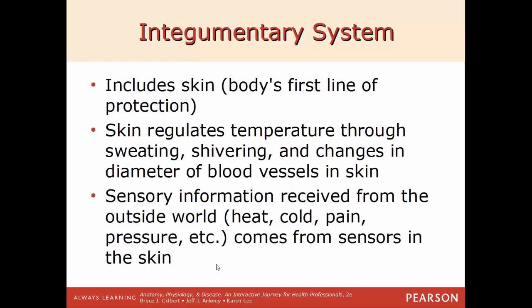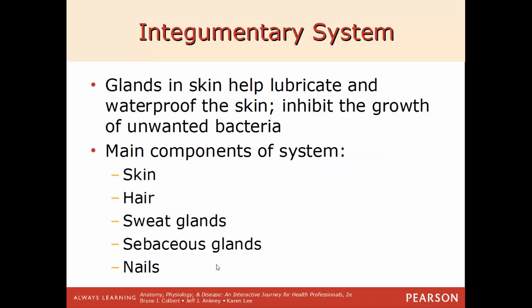The integumentary system includes the first line of defense — the skin. The skin helps regulate body temperature through sweating when too warm or shivering when too cold, achieved through changes in the diameter of blood vessels within the skin. It's also a key way for the body to receive information from the outside world and relay it to the brain, detecting cold, heat, pain, and pressure from various sensors throughout the skin. Various glands throughout the skin help make it more waterproof, lubricate it, and inhibit the growth of certain bacteria. The overall skin layer is slightly acidic, which discourages bacterial growth.